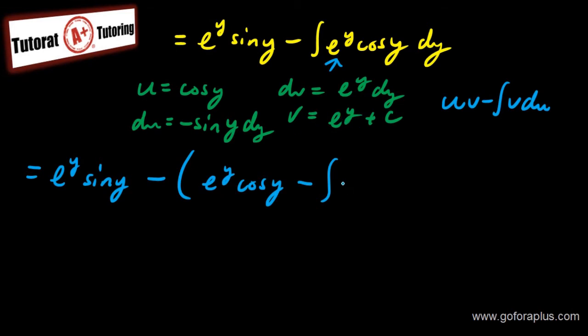So e to the y cos of y minus integral of v times du. So it will be minus. So I have a minus sign. So it will become a plus sign. e to the y sine of y plus c at the end. So dy here.